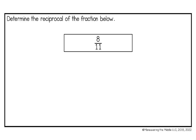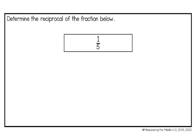8 over 11 would become 11 eighths. 3 over 1 — and this is why it is important that we remember to put whole numbers over 1 — because when we find the reciprocal of 3 over 1, that is 1 third. And the reciprocal of 1 fifth would become 5 over 1.